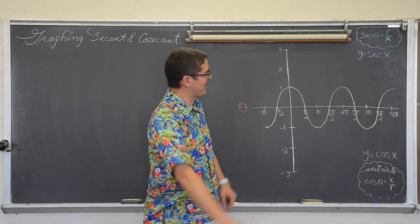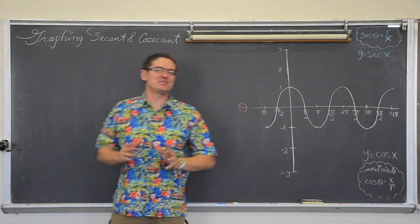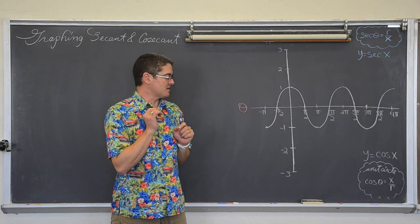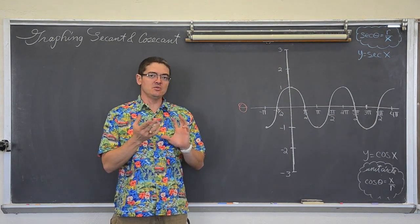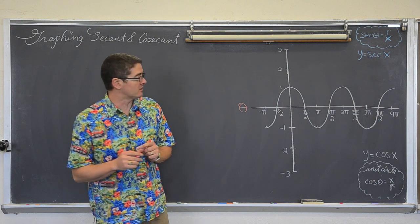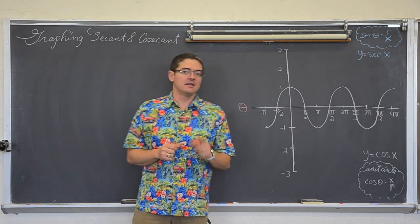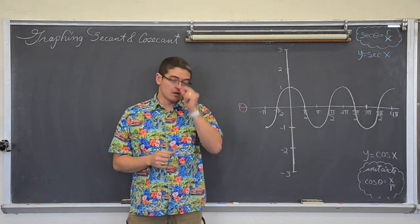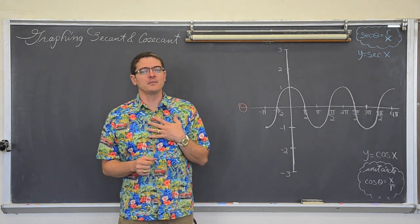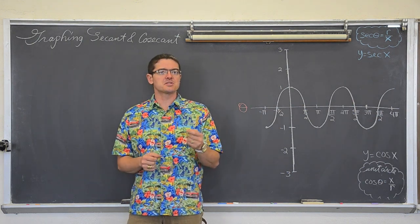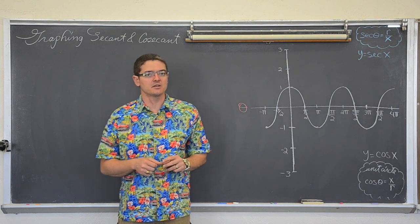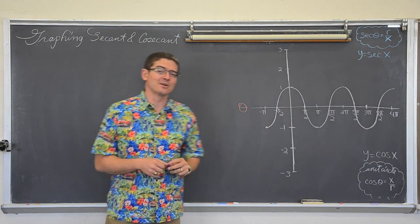BAM! Mr. Tarrou! We are going to look at the relationship between cosine and secant and use that to help teach you how to graph secant and cosecant graphs. Now if you have already figured out using t-tables — that is how I am graphing them — to graph sine and cosine, then you already know how to graph secant and cosecant. You just don't know it yet.